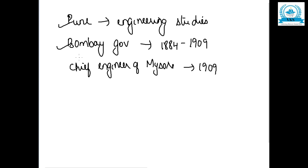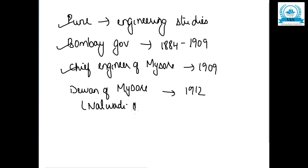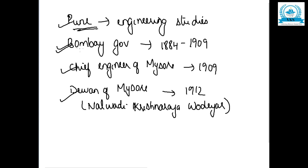After that, he was appointed as the Divan of Mysore in 1912 by Nalwadi Krishna Raja Wodeyar. So after completing his engineering studies from Pune, he first served under the Bombay government until 1909, then became Chief Engineer of Mysore in 1909, and Divan of Mysore in 1912.